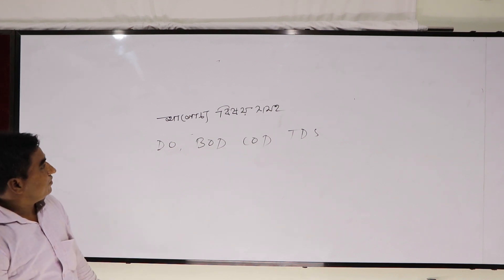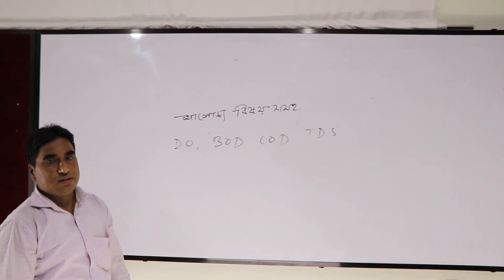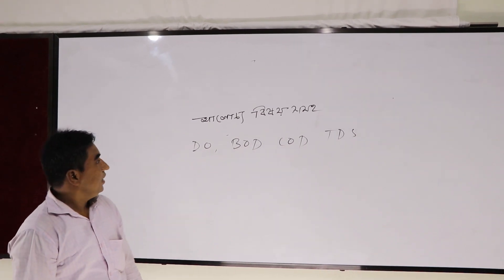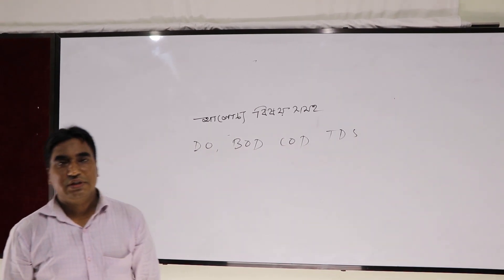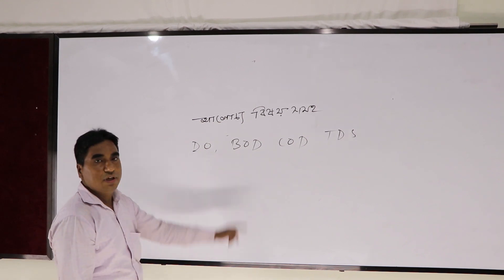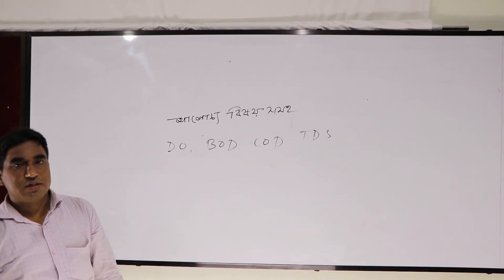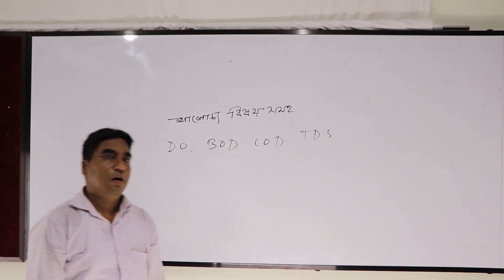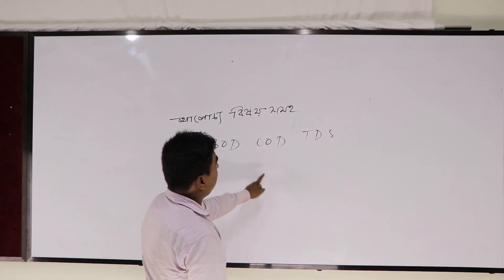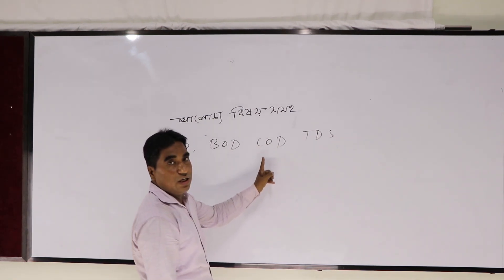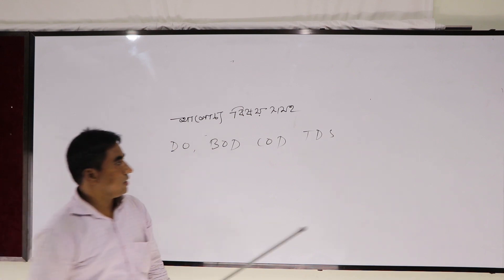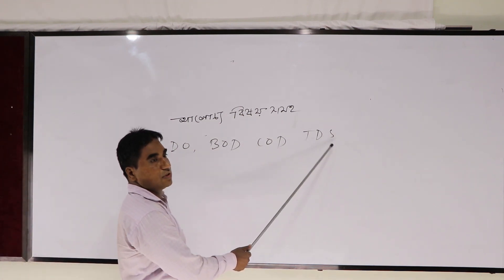In other words, we have written about DO. DO is dissolved oxygen. BOD is biochemical oxygen demand, or biological oxygen demand. COD is chemical oxygen demand. TDS is total dissolved solid.